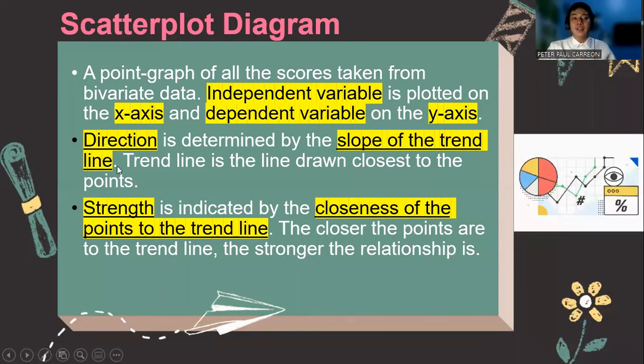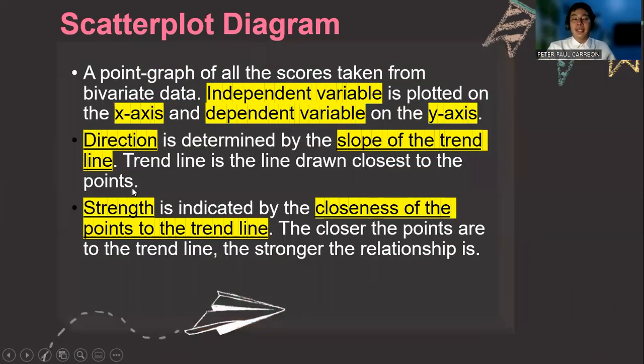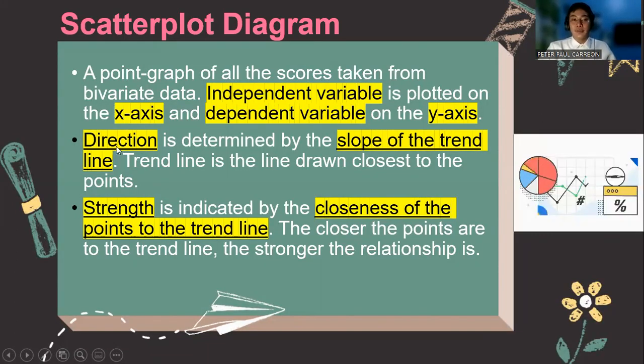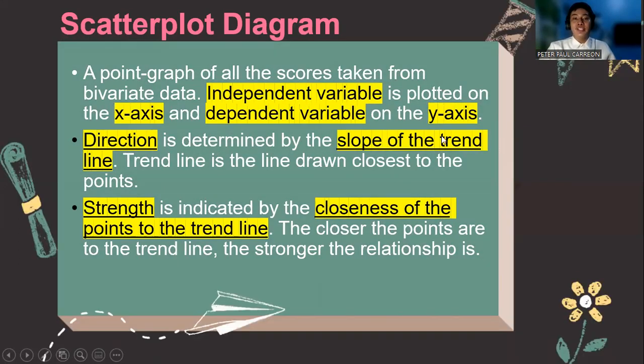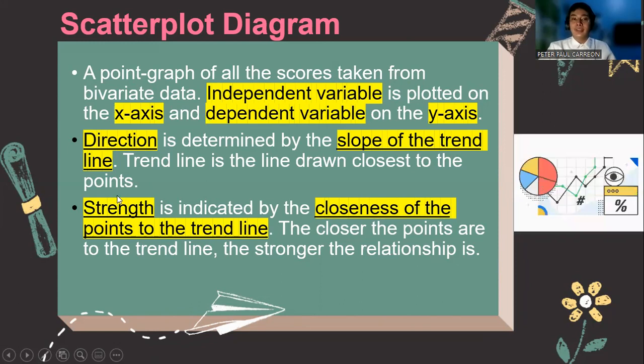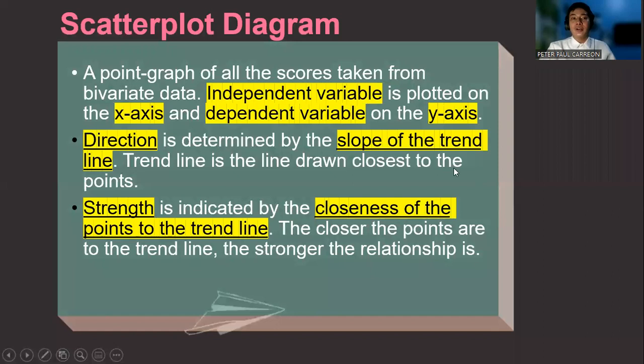So there are two possible descriptions that we could see in the scatterplot diagram. The first one is what we call the direction. So the direction is determined by the slope of the trend line. The trend line is the line drawn closest to the points.